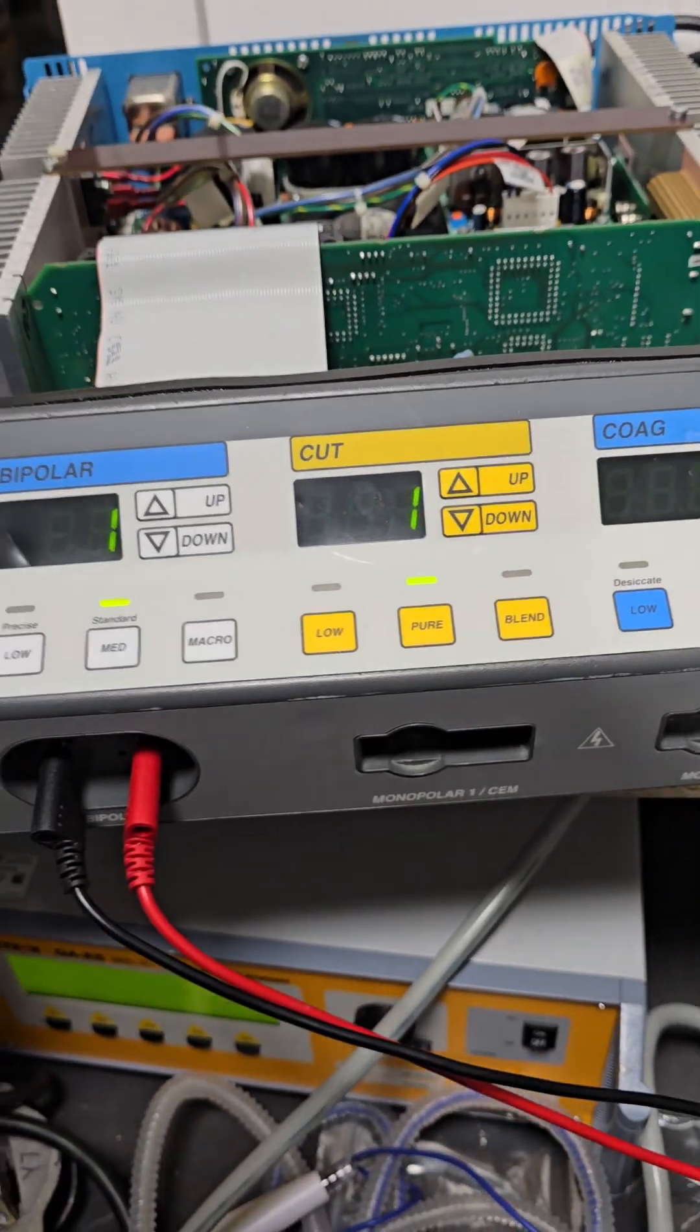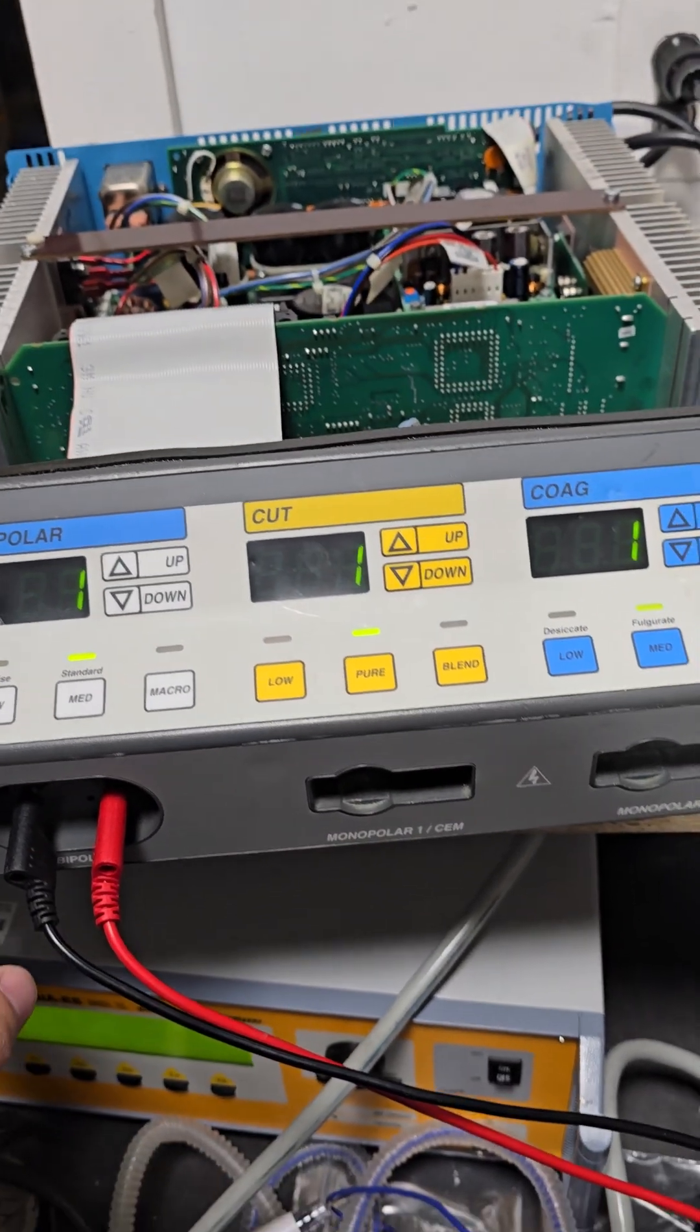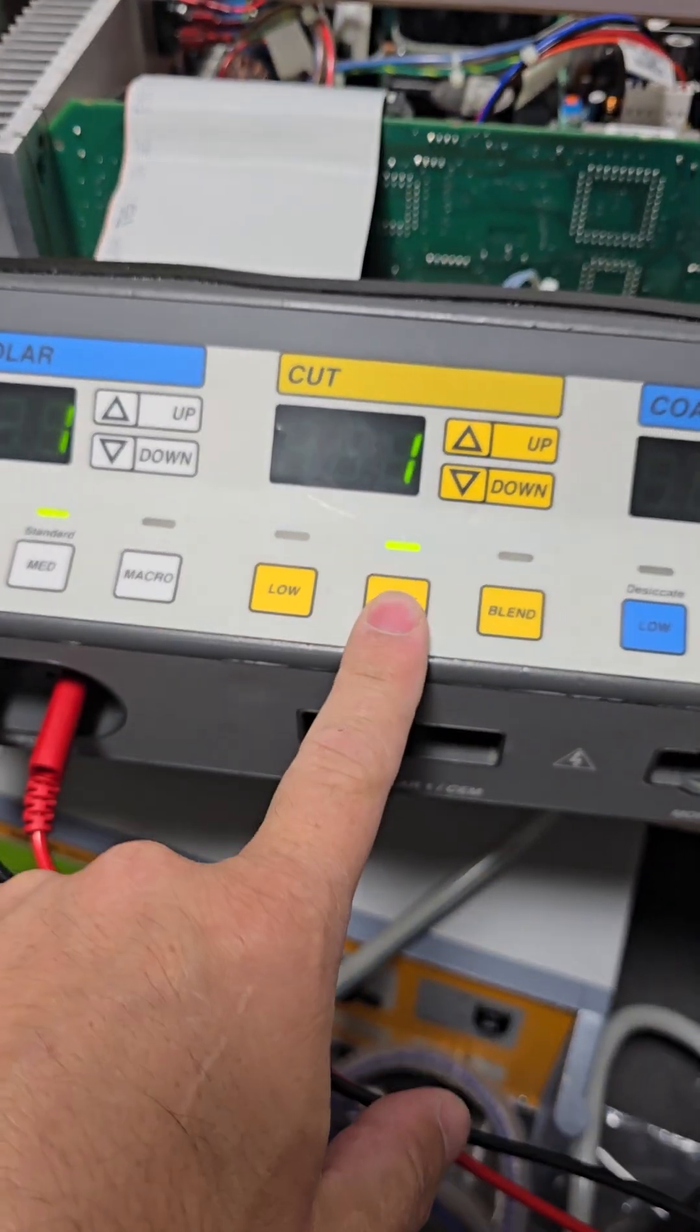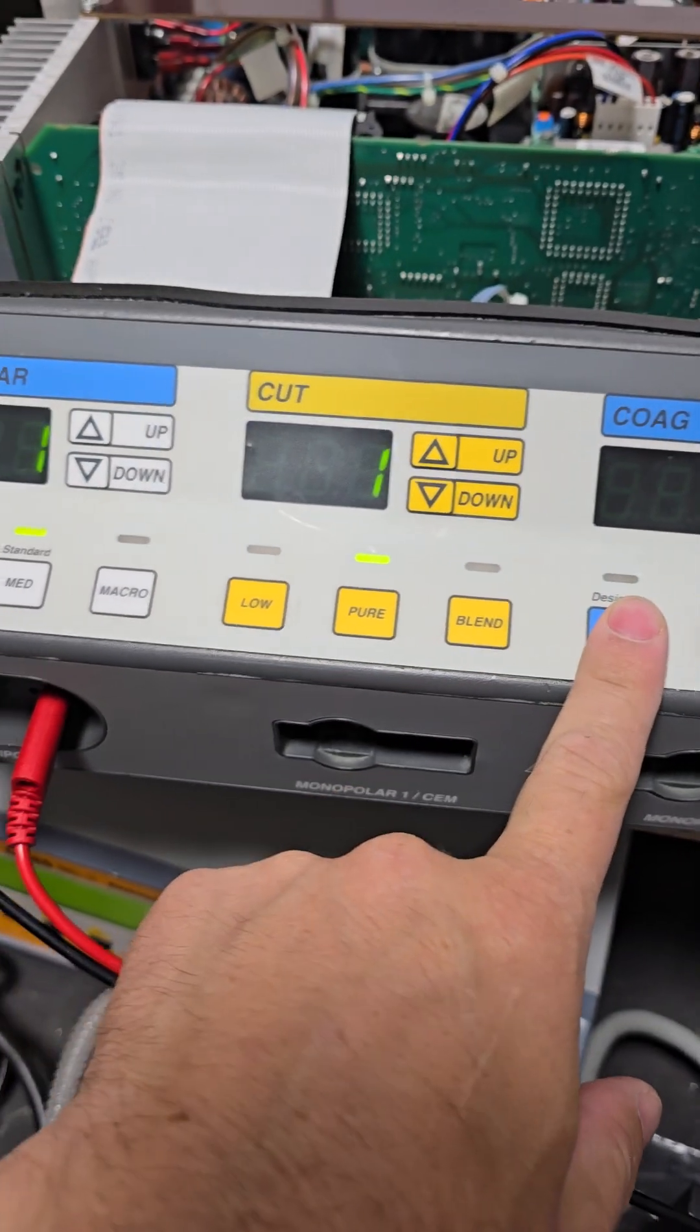Alright, that is self-test LED. Next step to get into calibration mode, we're going to hold down the Recall, Cut's Pure button, and Coag's Low button.